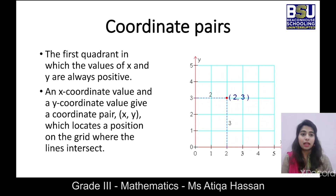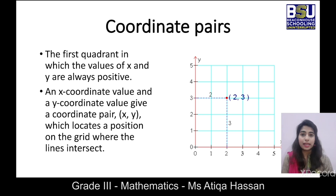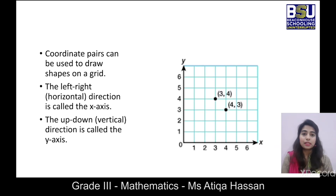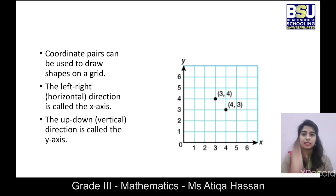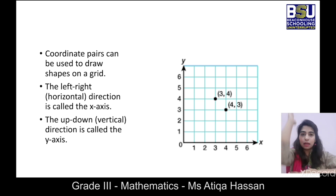For example, you can see here we have the x-axis with positive values and the y-axis with positive values, and a specific point showing the coordinate pair (2, 3) — where 2 is the x-coordinate and 3 is the y-coordinate. Remember: in alphabetical order x comes before y, so in coordinate pairs we write x first and y second. Coordinate pairs can be used to draw shapes on a grid by joining different points. The left-right horizontal direction is the x-axis, and the up-down vertical direction is the y-axis.